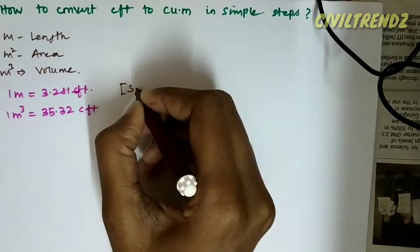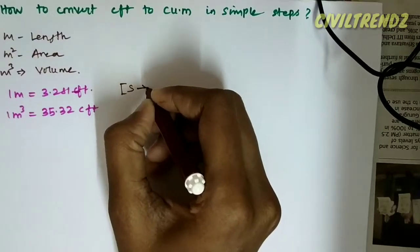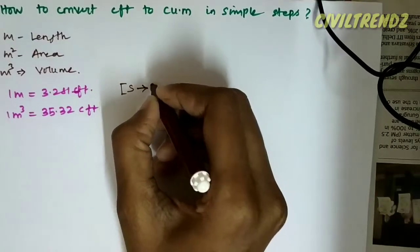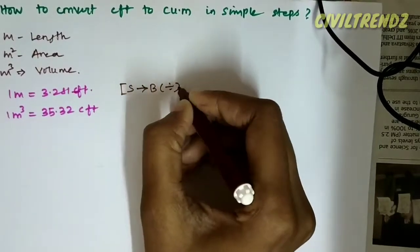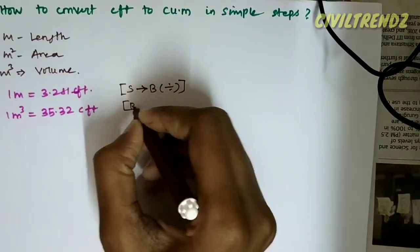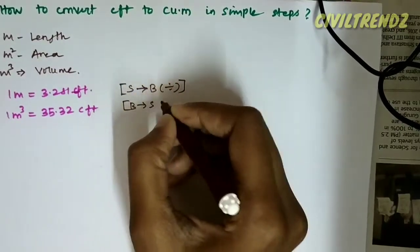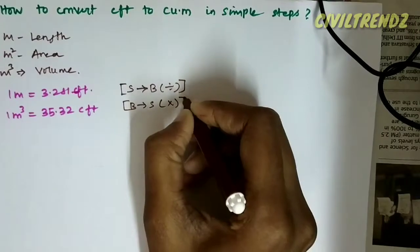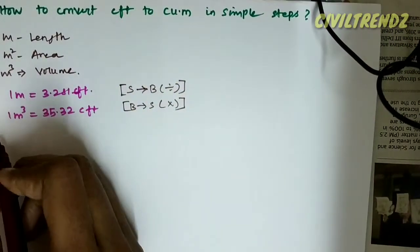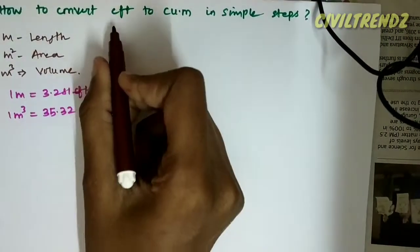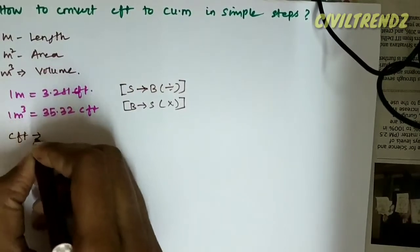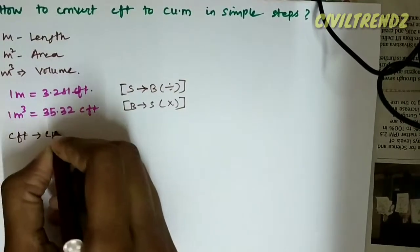Let's look at small dimension conversion. To convert a big dimension, we divide. Big to small unit conversion means we multiply. Let's do it — cubic feet to cubic meter.